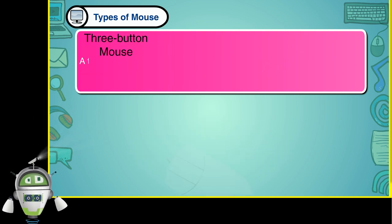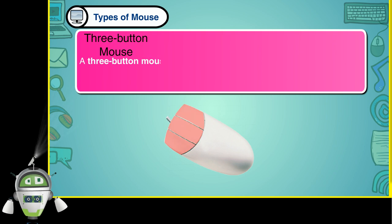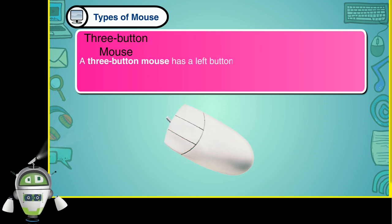Three-button mouse. A three-button mouse has a left button, a right button and a middle button.